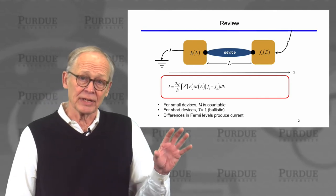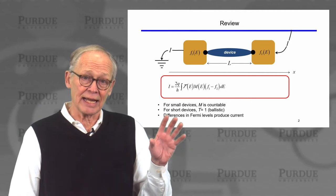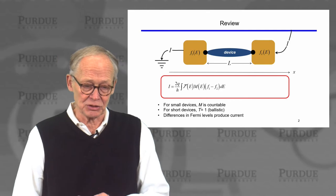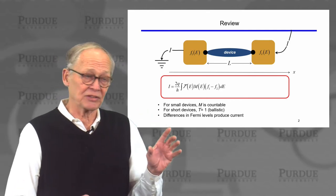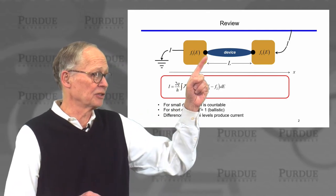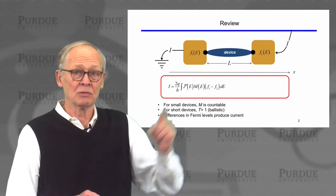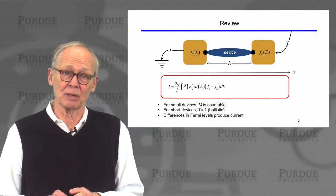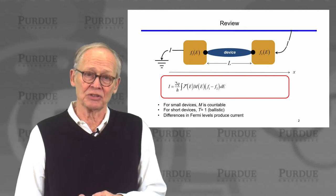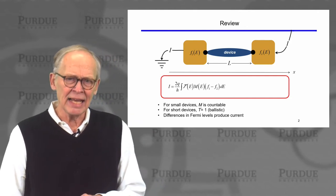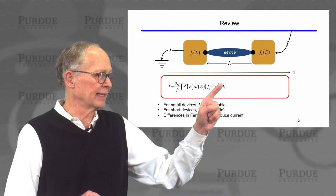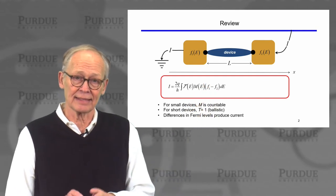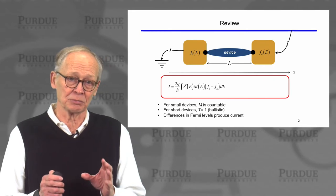So for small devices, it's important to recognize that you can actually count the number of channels, so the current comes in discrete chunks. For short devices, the probability that an electron injected from the first contact will go across and exit the second contact, that's the transmission, that probability is one. We call those devices ballistic. And the important point is to recognize that it is differences in the Fermi levels of these two contacts that cause current to flow in a small nano device.